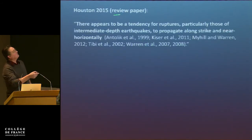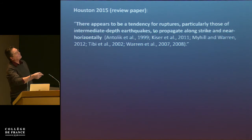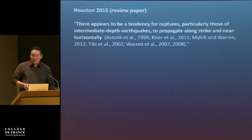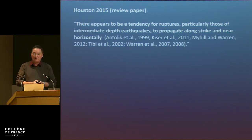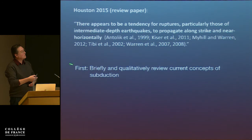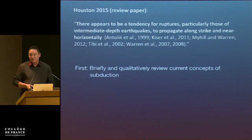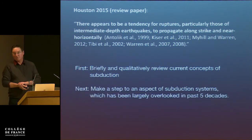I found in one of these review papers an interesting quote: there appears to be a tendency for ruptures, particularly those of intermediate-depth earthquakes, to propagate along strike near horizontally, with a lot of references. That inspired me — what would be the state of stress in the slab to cause that? I will try to conceptually give you an idea of what I think might underlie that. First I'll start with a qualitative review of what most people think about subduction, and then I'll make a step to something new — called Slab Dragging.